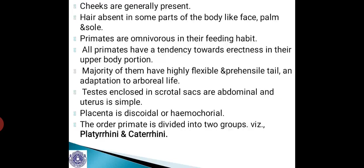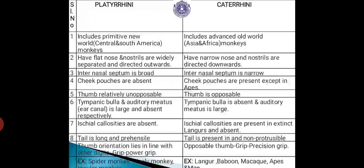The order Primata is divided into two groups: Platyrrhini and Catarrhini. Platyrrhini includes primitive New World monkeys, which includes Central and South American monkeys. Catarrhini includes advanced Old World monkeys from Asia and Africa.